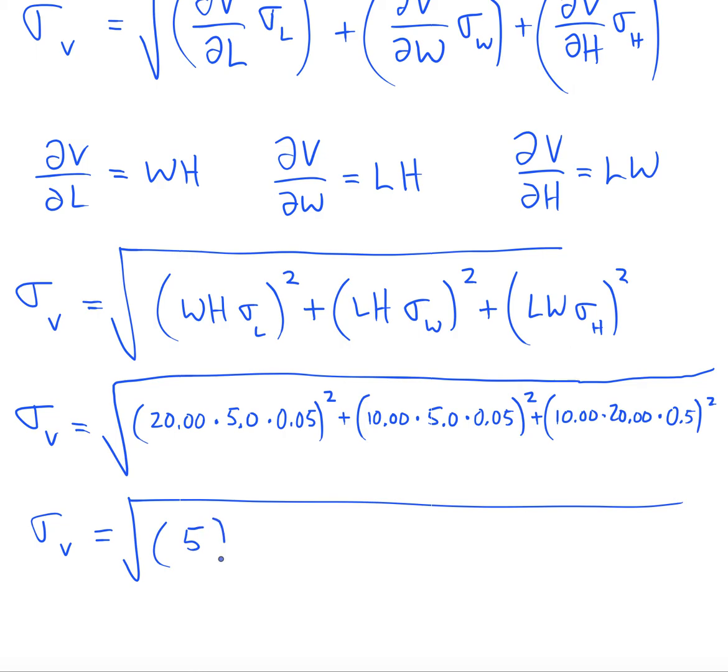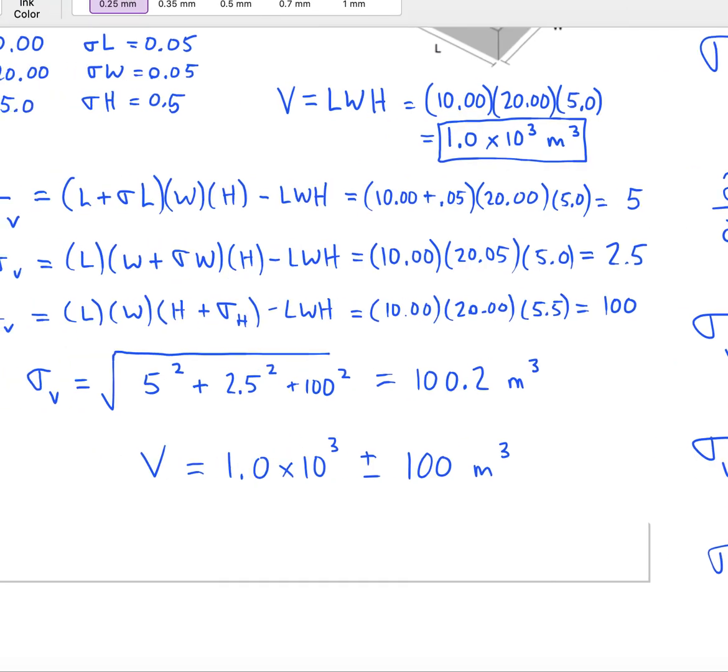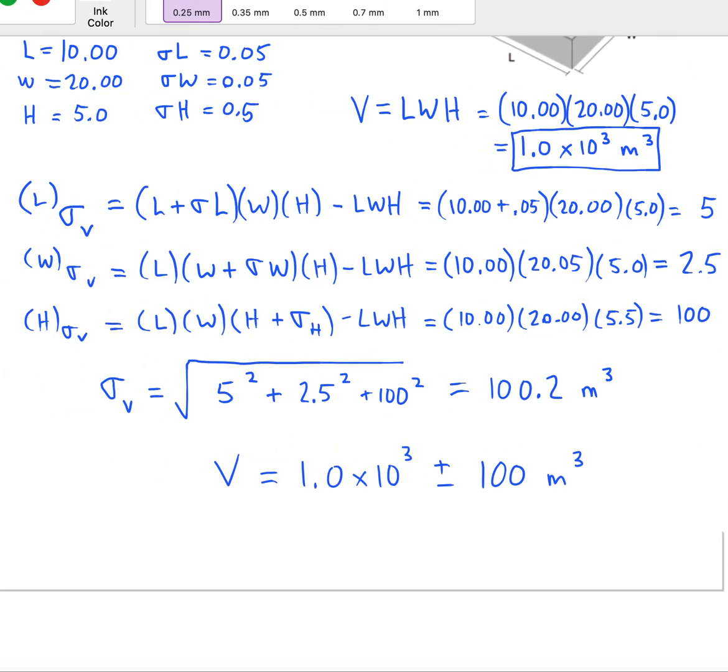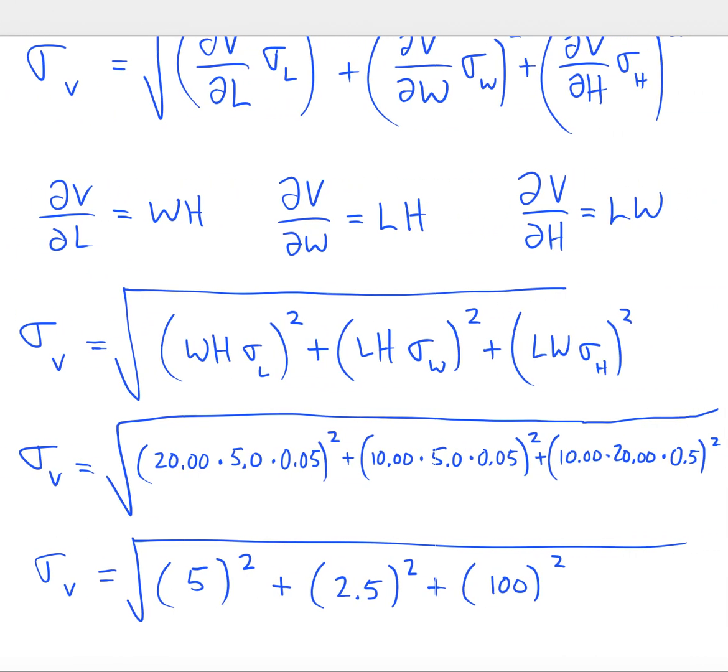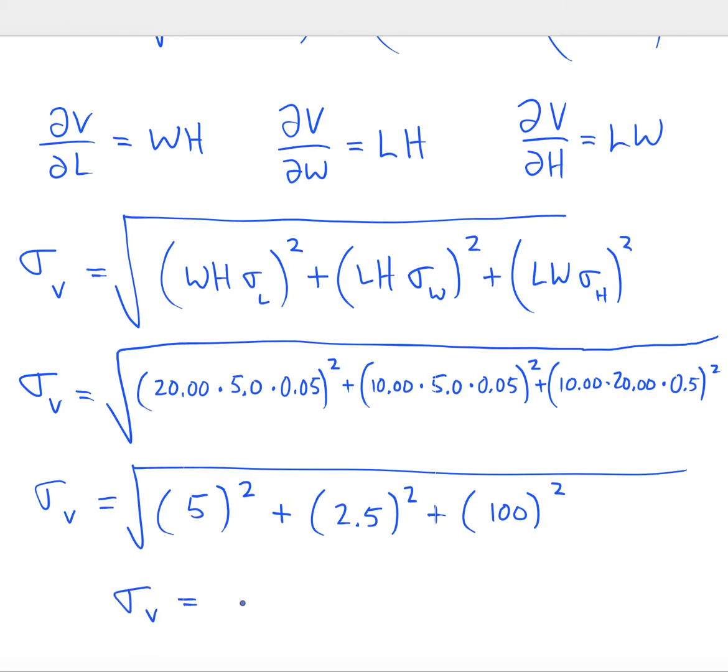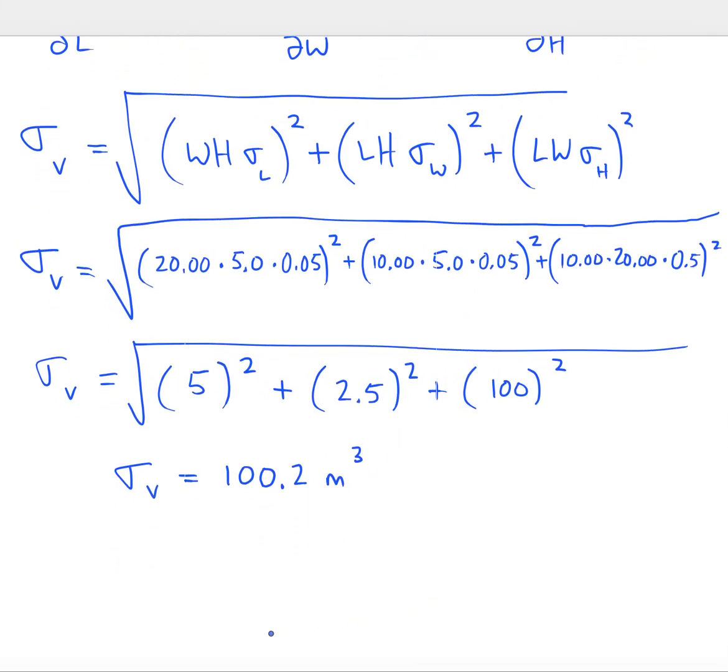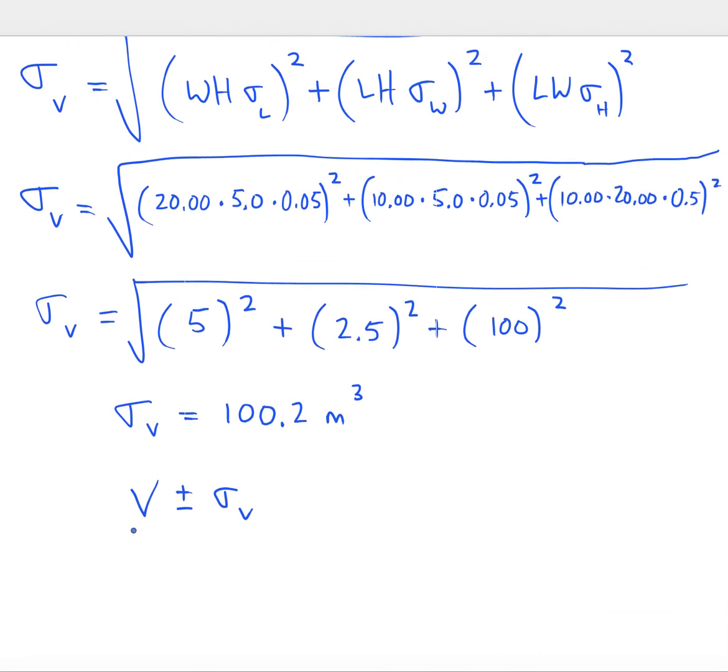We're going to get 5 squared plus 2.5 squared plus 100 squared. Same as we had gotten using the other technique. And again, our uncertainty in V comes out to 100 meters cubed. So we want to do V plus or minus sigma V.